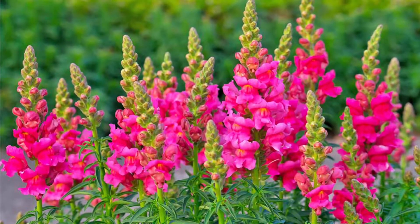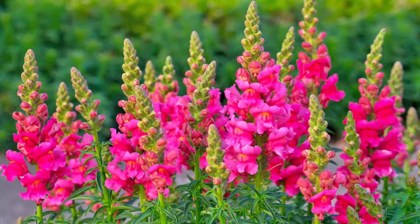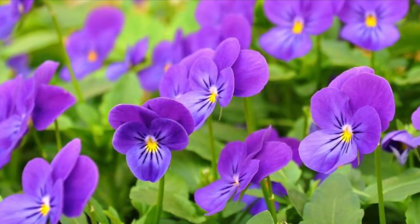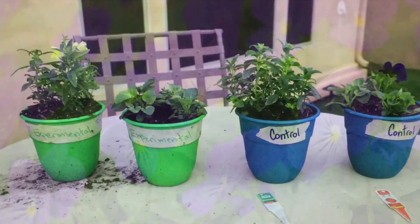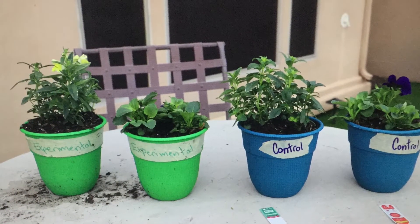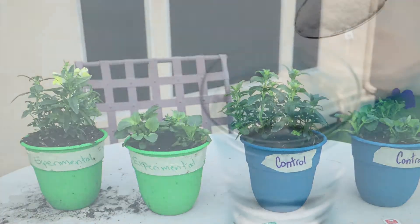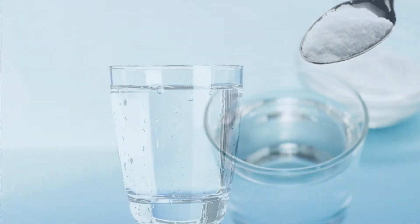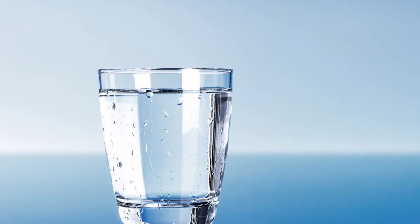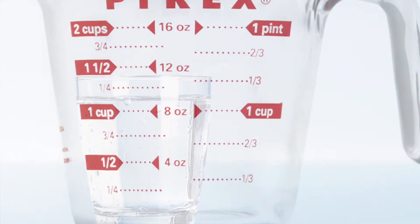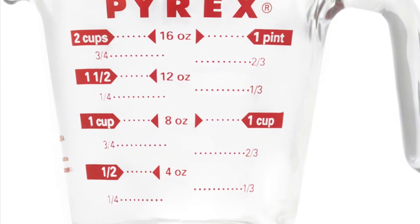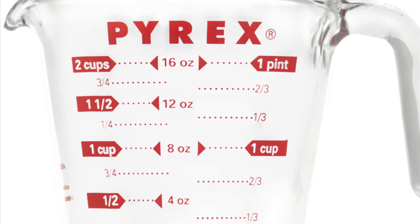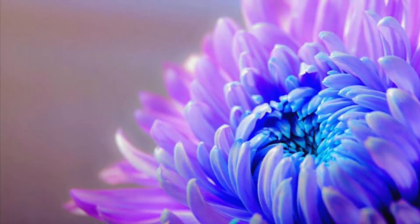For my experiment, I used two different groups of plants: snapdragons and pansies. Each plant had two of its own groups, experimental and control. The experimental plants were the ones that were given sugar water, and the control plants were given regular water. Every morning for three weeks, I gave each plant four ounces of the kind of water prescribed to them.